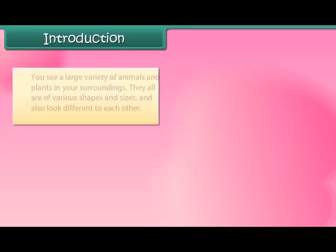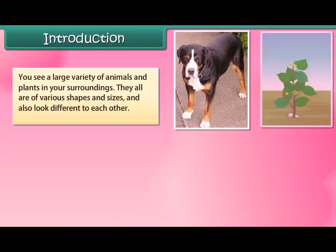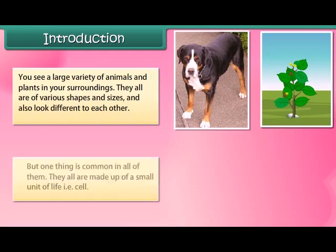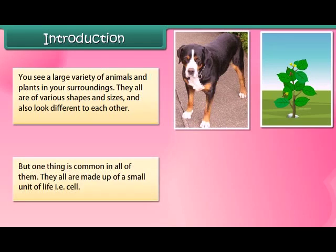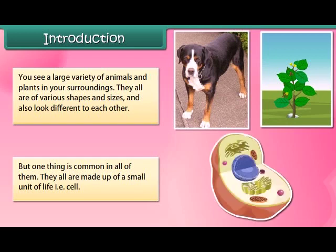You see a large variety of animals and plants in your surroundings. They all are of various shapes and sizes and also look different from each other. But one thing is common in all of them — they all are made up of a small unit of life, that is, the cell.